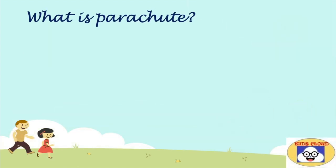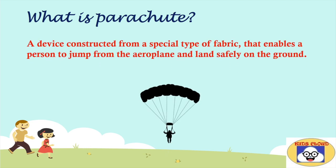Every curious kid would like to know about parachutes. Basically, it is a device constructed from a special type of fabric that enables a person to jump from the aeroplane and land safely on the ground. In simple words, a parachute is used to slow down an object or person falling towards the ground.